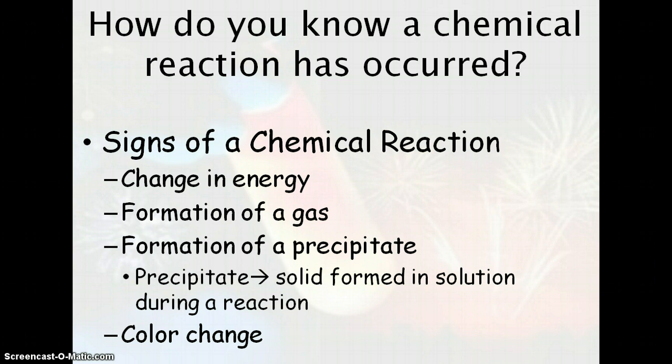How do we know that a chemical reaction has occurred? Just like in that lab, we look for signs that a chemical reaction can occur. These would be change in energy—so sound, heat, light—formation of a gas, formation of a precipitate, which is a solid that is formed in solution during a reaction, or a change in color.